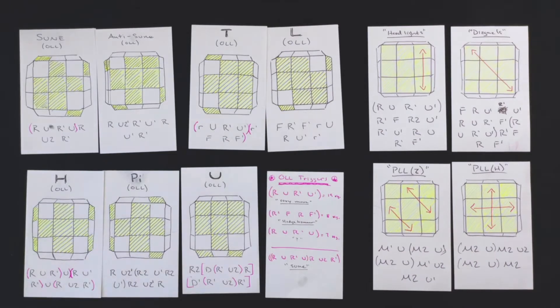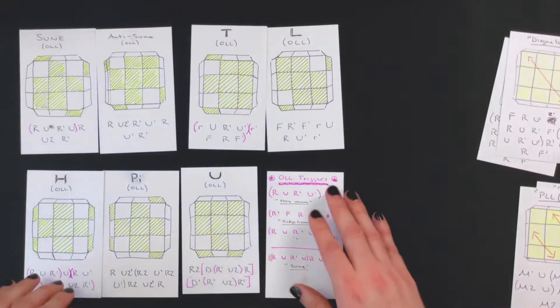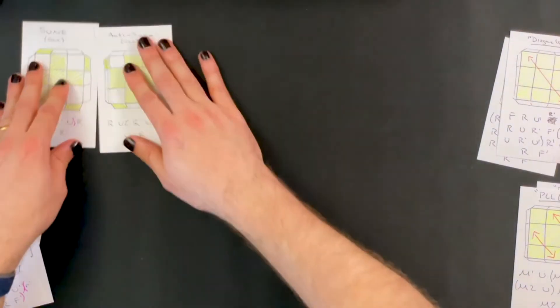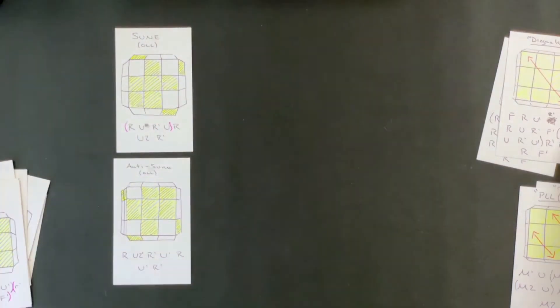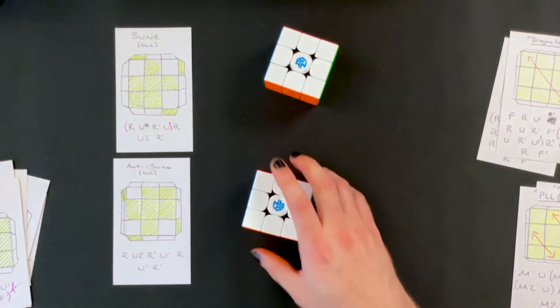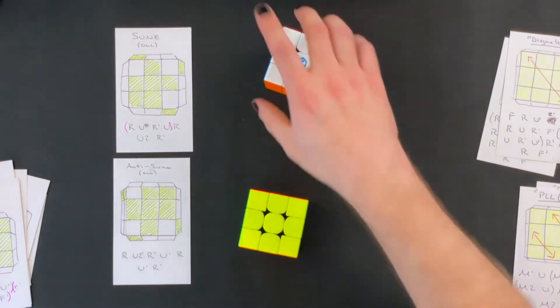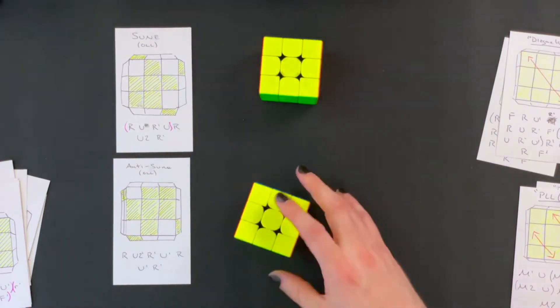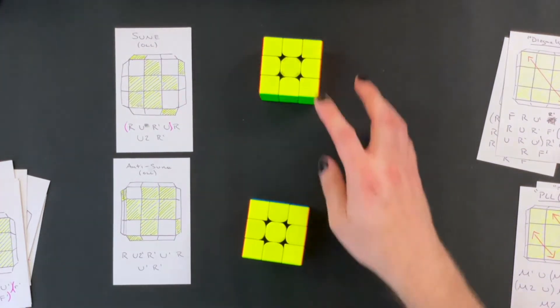I found that for most of these states working from a solved cube you could end up at one of the other algorithms at the end of that. So for instance starting with the sune from a solved cube leads you to the anti-sune and so that was one that I started with right off the bat partially because it was named and partially because I figured out that this was the case.